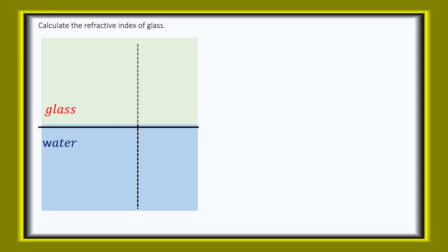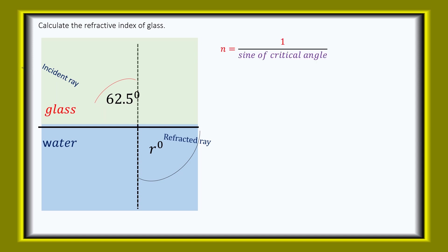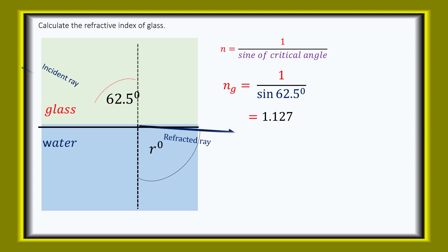Calculate the refractive index of glass with respect to water. The ray is traveling from glass to air, and the critical angle in glass is 62.5 degrees. So the refractive index of glass with respect to water equals one over sine of the critical angle: one over sine 62.5 degrees, which gives 1.125.